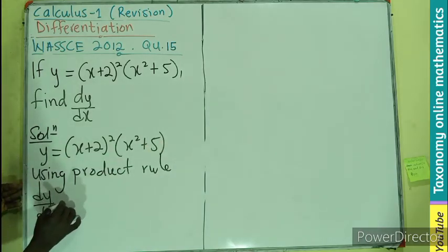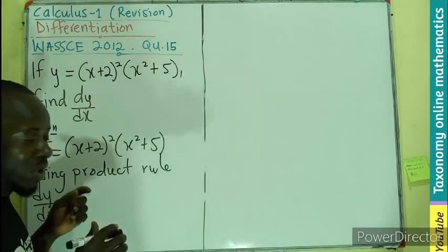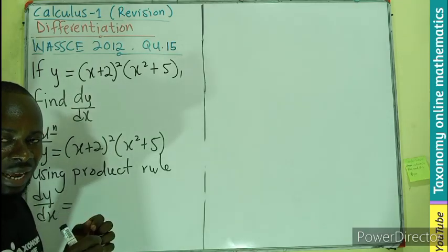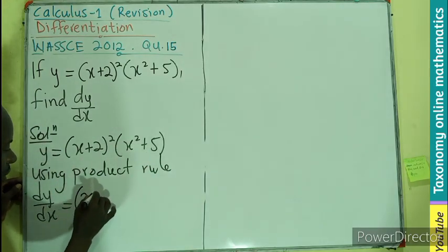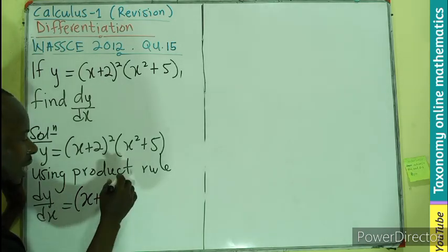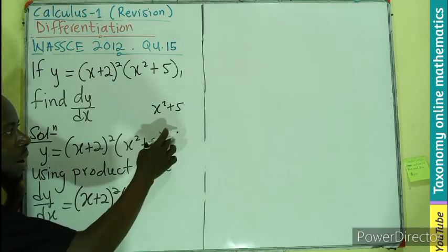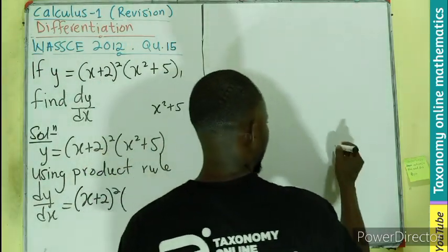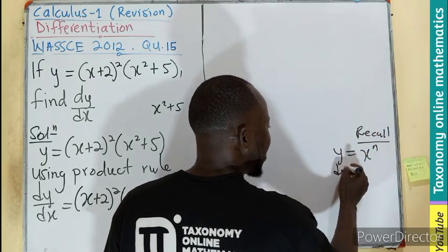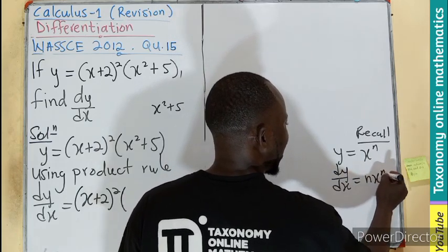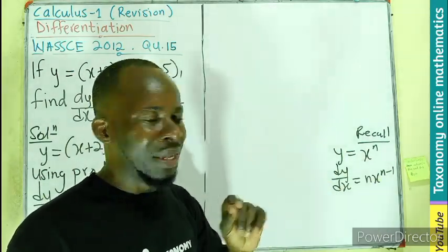Our dy/dx is going to be the differentiation of this and this directly. First thing, we'll hold the first term, which we are taking as u. The whole of this with a square is what we are taking as u. So we hold the u, we differentiate the v. Meaning, I will have my (x+2)² all squared. Then I am now going to differentiate the second term, which is x²+5. There is no power here. So per recall, we know that if I have y equals to x^n, then differentiating with respect to x means that, let the power come forward to multiply.